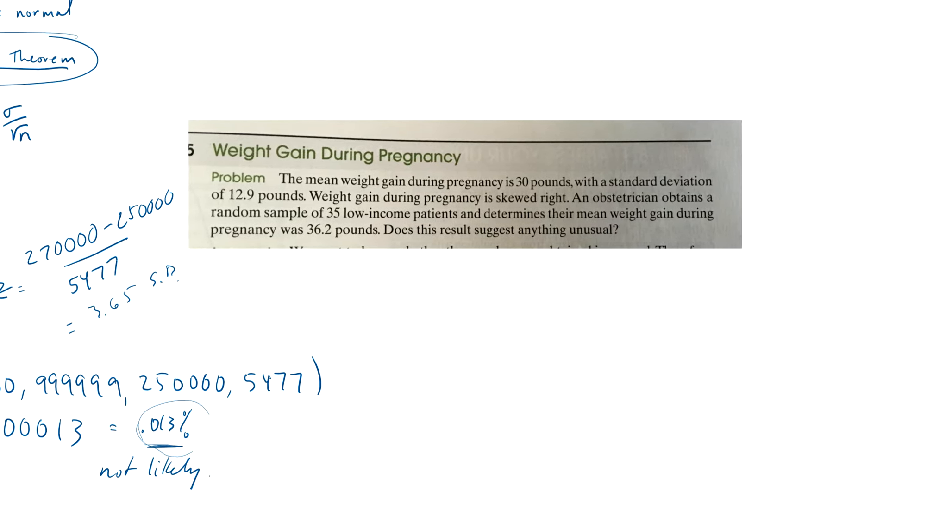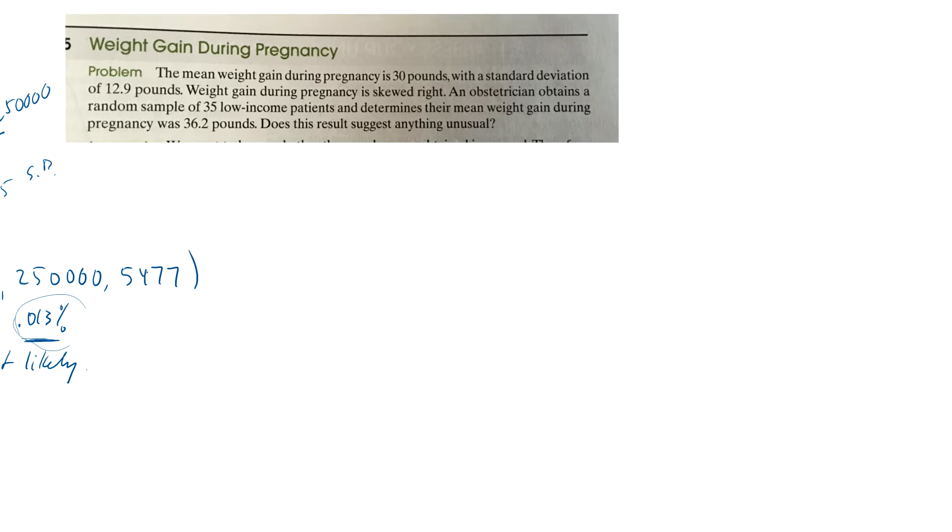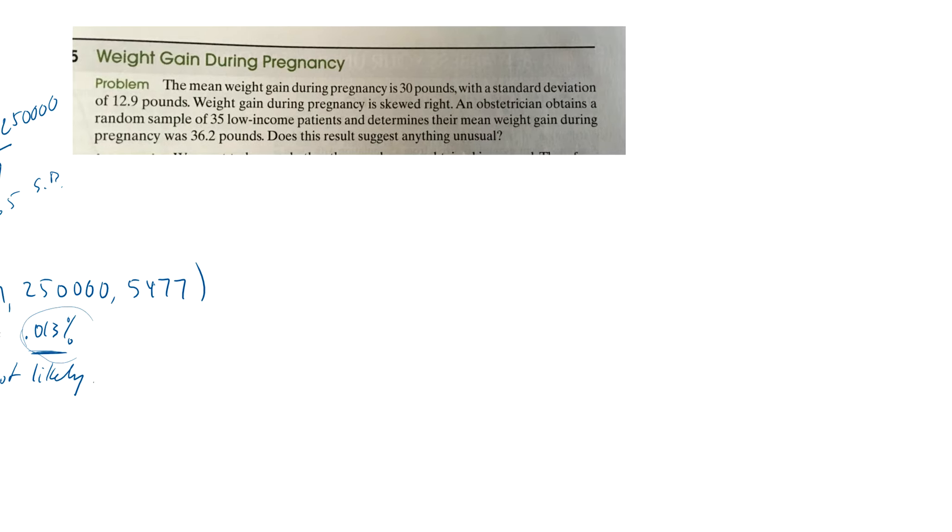All right, let's do one last problem here, and let's do this one right here. Weight gain during pregnancy. The mean weight gain during pregnancy is 30 pounds. I'm sorry, ladies. With a standard deviation of 12.9. Weight gain during pregnancy is skewed to the right. An obstetrician obtains a random sample of 35 low-income patients and determines their mean weight during pregnancy was 36.2. Does this suggest anything unusual?